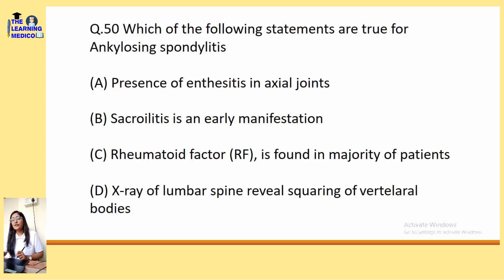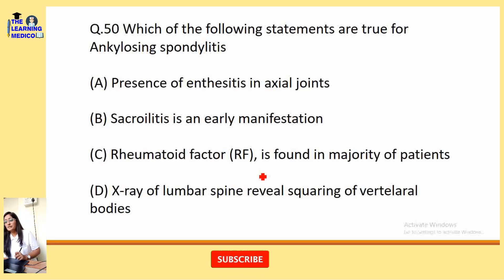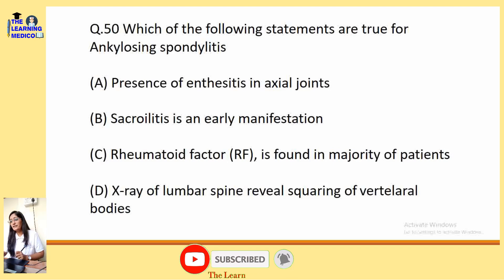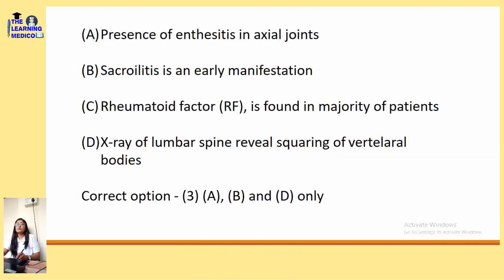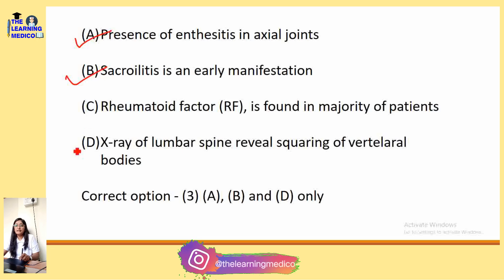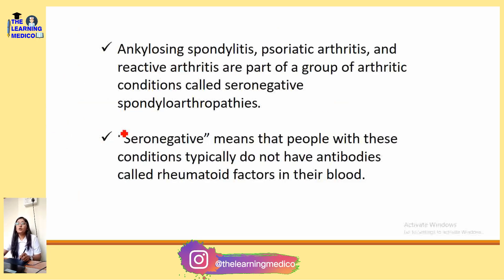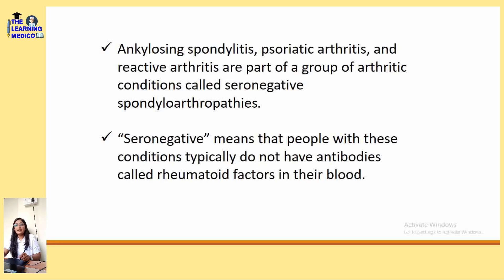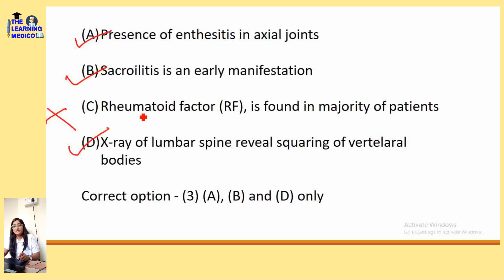Which of the following statements are true for Ankylosing Spondylitis? Presence of enthesitis in axial joint — correct. Sacroiliitis is the early manifestation — correct. Rheumatoid factor is found in the majority of patients — incorrect. X-ray of lumbar spine reveals squaring of vertebral bodies — correct. The correct option is option 3 (A, B, and D). Ankylosing Spondylitis, Psoriatic Arthritis, and Reactive Arthritis are part of seronegative spondyloarthritis, meaning they typically do not have antibodies to rheumatoid factor.